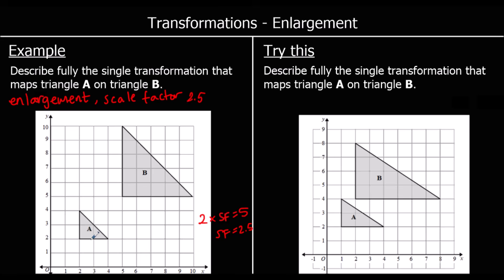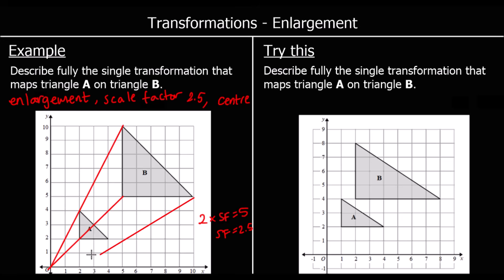So we've got an enlargement, scale factor 2.5. And we also need to know the center of enlargement, so we write center. To find the center of enlargement, we can join up the points that go together — join up this top corner with the corner down here, join up this point on B with the same point on A, and this point on B with the same point on A. And we can see they all meet at the origin. So the center of enlargement is at the origin.